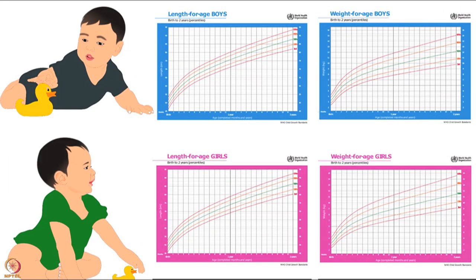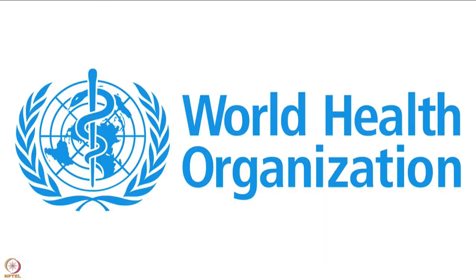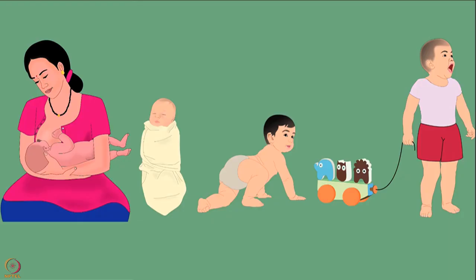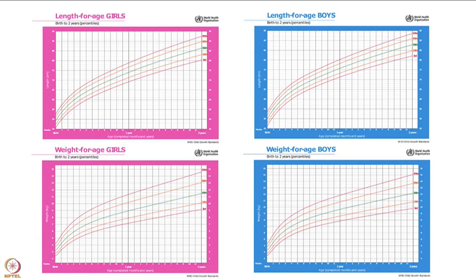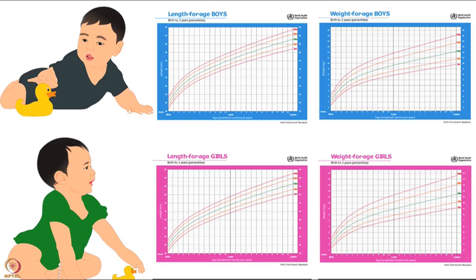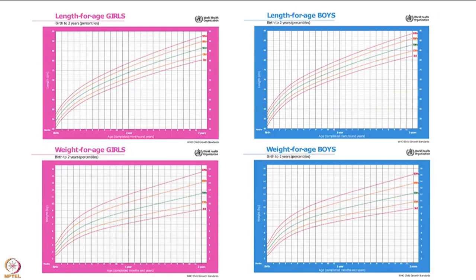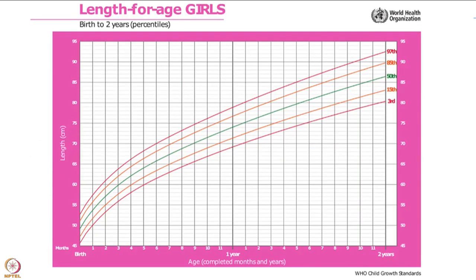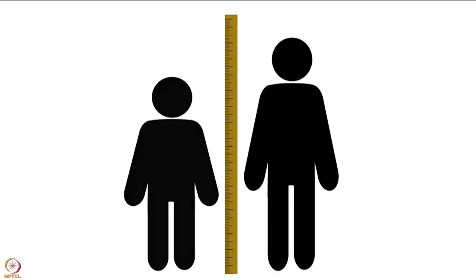It is important to use growth charts as per the child's gender. The growth charts used in this tutorial are from the World Health Organization, for children in the 0 to 2 years age group. These charts are available at www.who.int. The length for age growth chart is used to plot the length for age growth indicator, which can help identify children who are stunted or short.